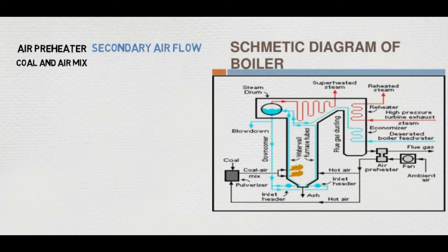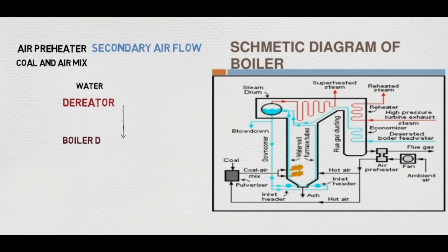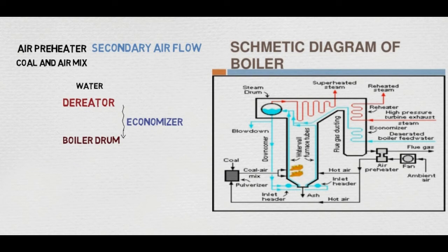The coal and air mix passes into the boiler for lighting up the boiler. The water comes from the deaerator to the boiler drum via the economizer. When water passes through this economizer, it is preheated by the flue gas and then fed to the drum. The water is then heated in the furnace tube and superheated steam is generated.